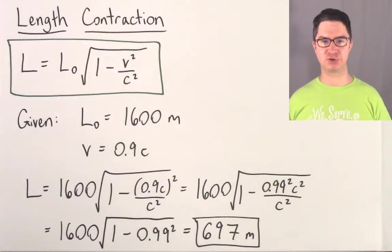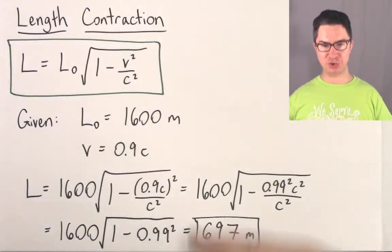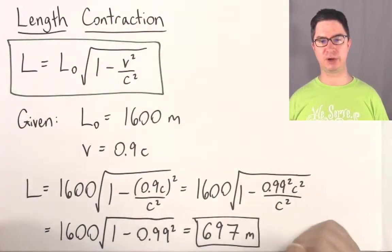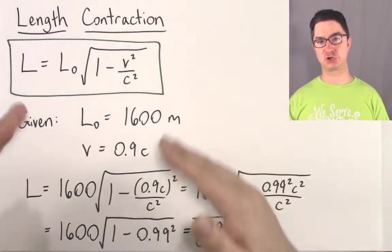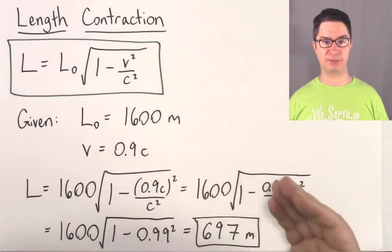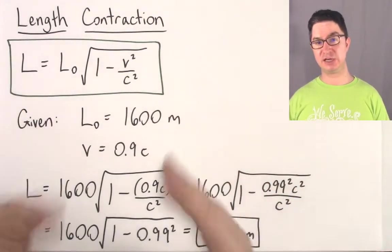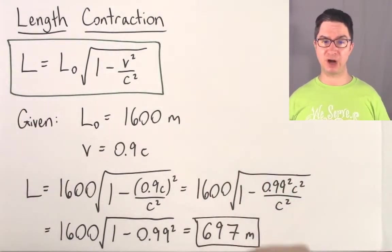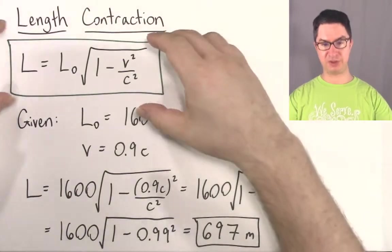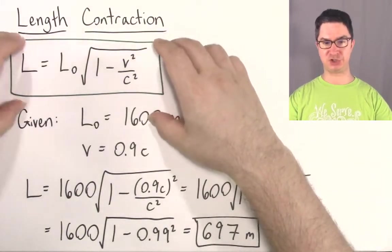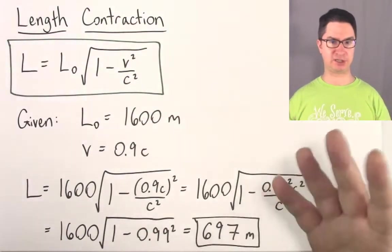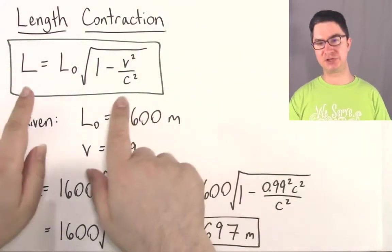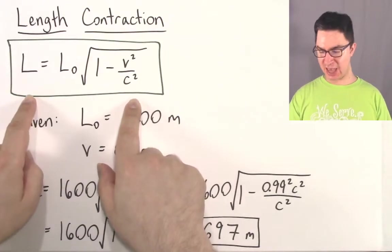Let's talk about length contraction. What you see here is a typical problem where we have to solve for the contracted length of an object moving near the speed of light. But before I give you the equation and just say let's plug in some numbers, let's walk through the derivation of this equation.